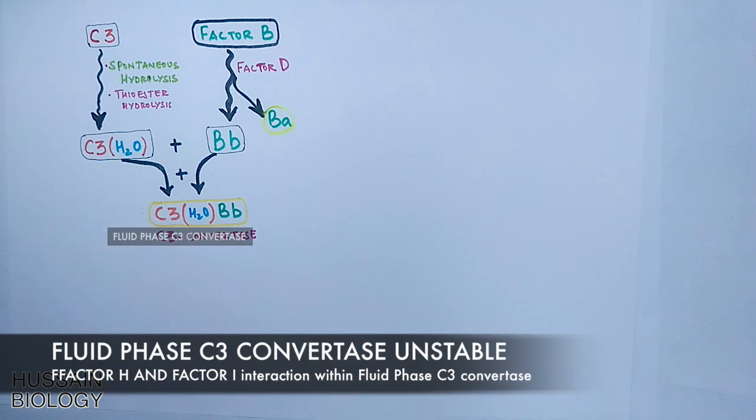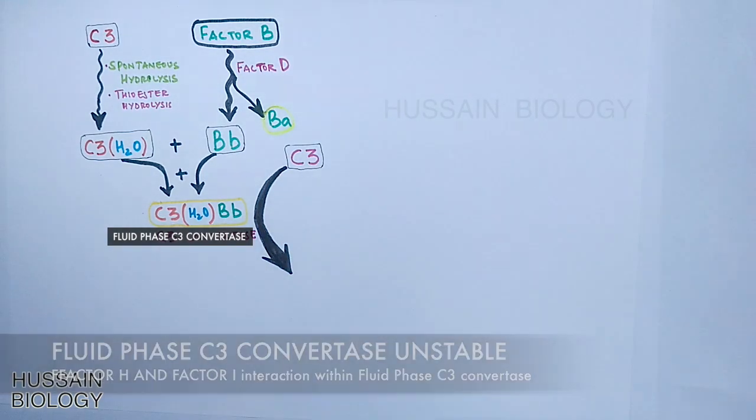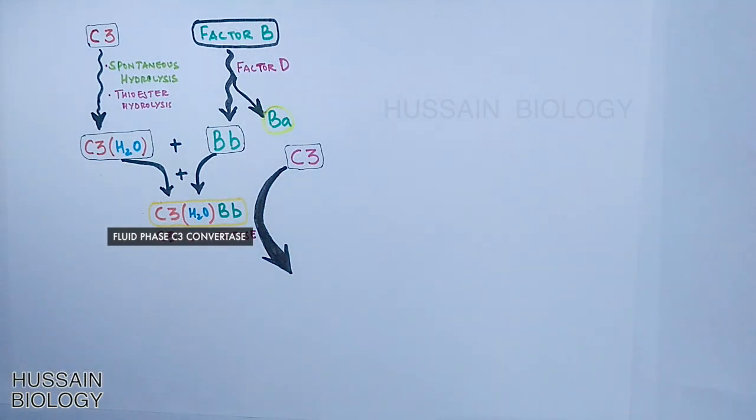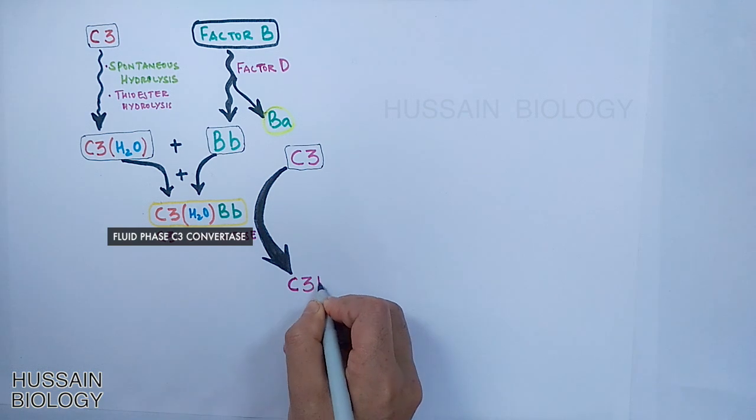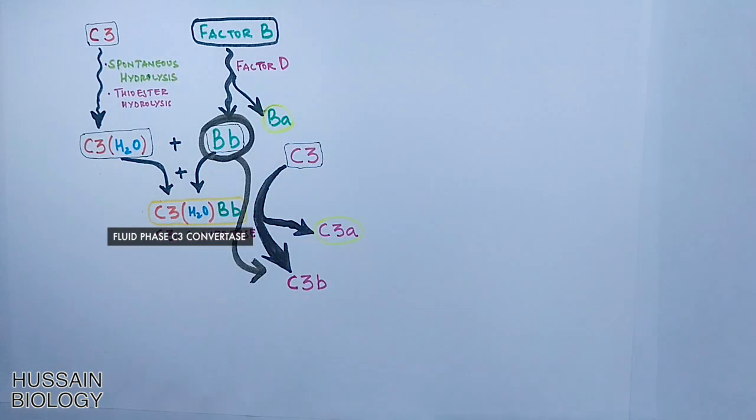Although this fluid phase C3 convertase works on few molecules of C3 and converts it into two fragments, C3b and C3a. And now to this C3b molecule, the Bb molecule which is already present in the plasma combines with it.